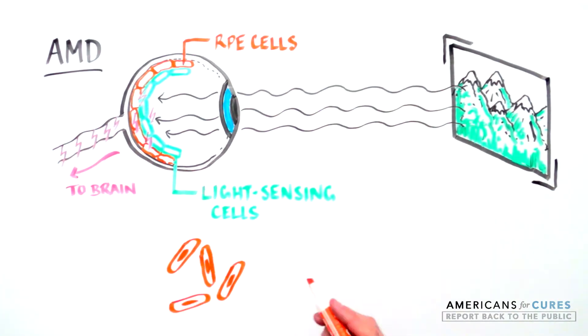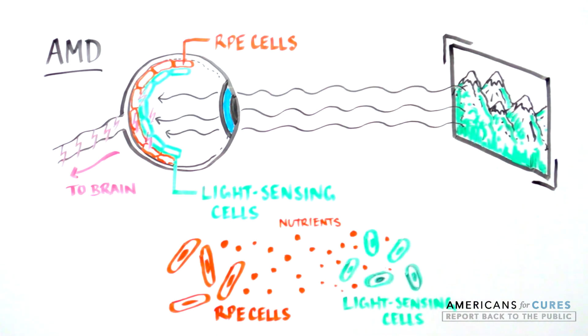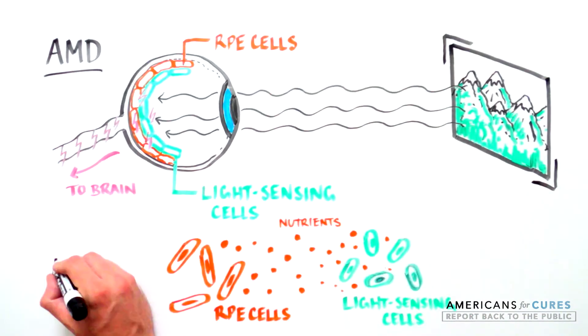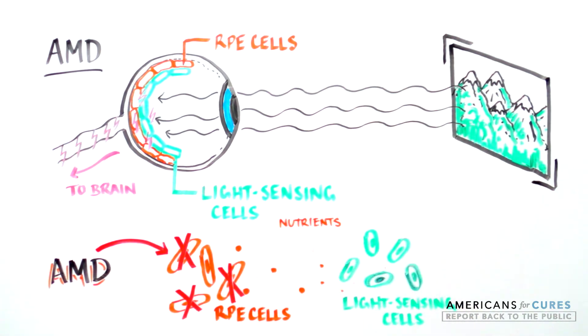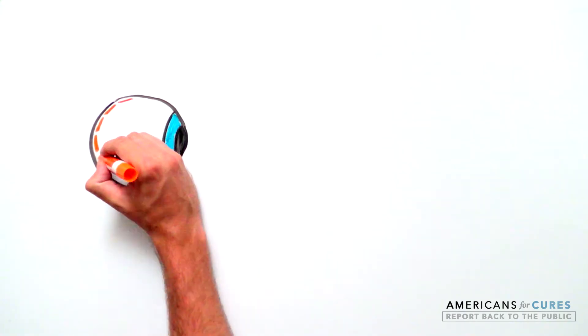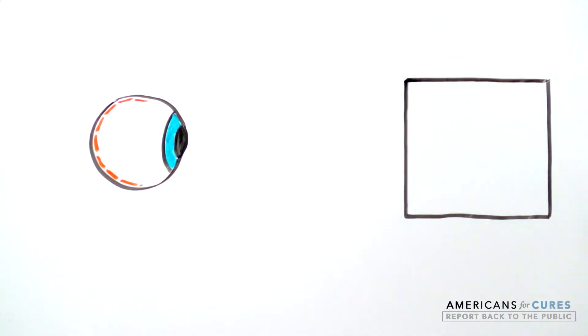However, in order to function, these light-sensing cells require support and nutrients from cells that keep the back of the eye healthy, called retinal pigment epithelial cells. However, in AMD, these supportive RPE cells start to die so that the eye no longer has the nutrients and support necessary to maintain good sight. Without such support, light-sensing cells in the eye degenerate and vision loss occurs.